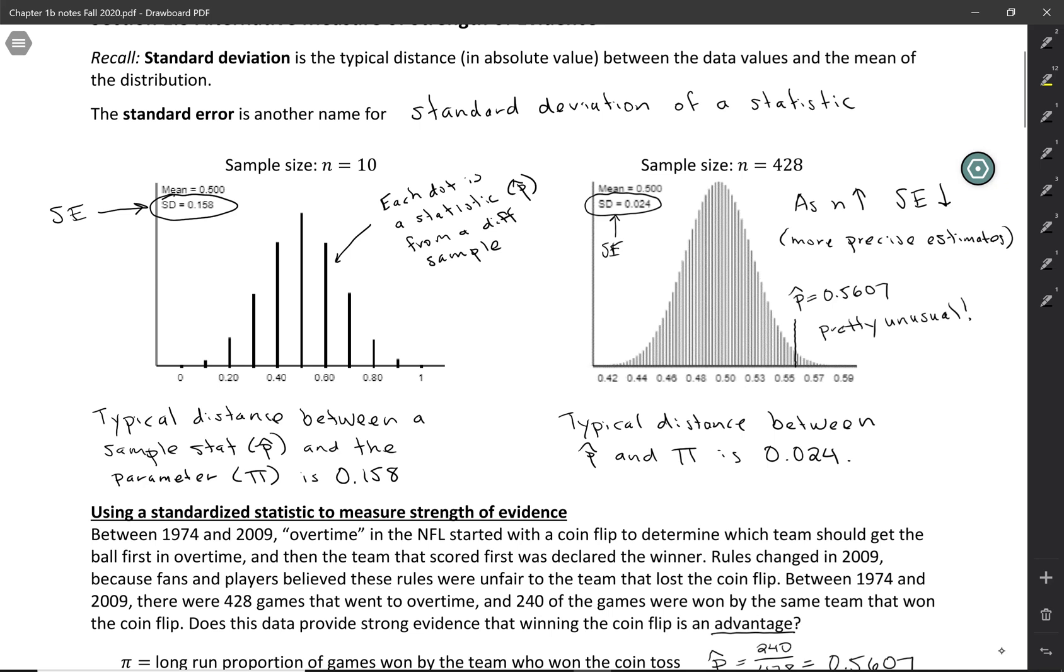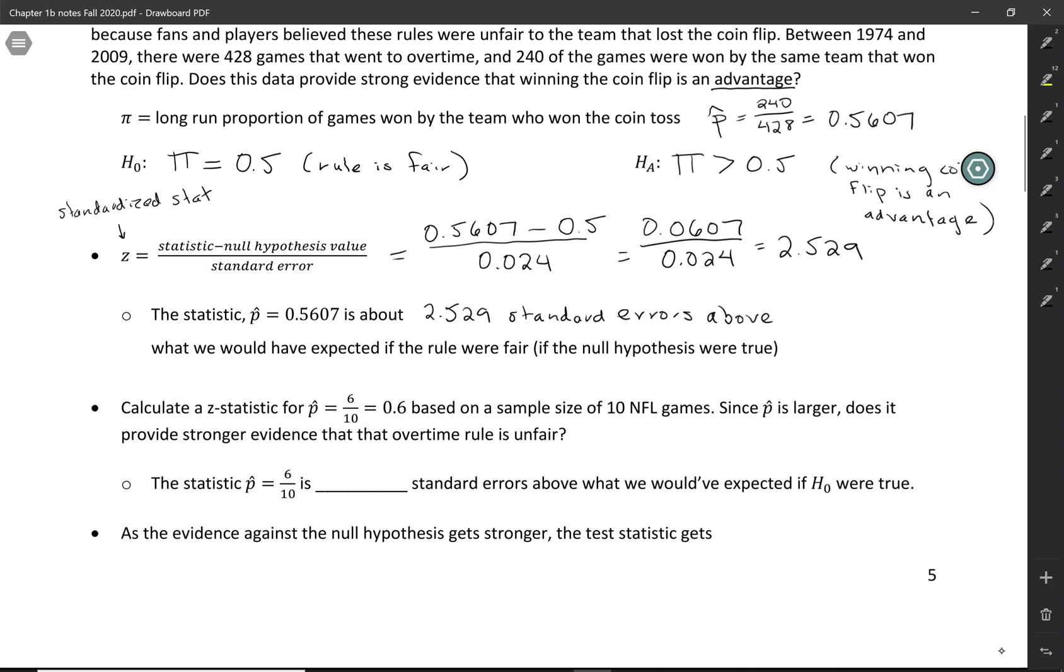What if we tried to do this based on only 10 games? Let's say we looked at a set of 10 games and 6 out of 10 times the team that won the coin flip went on to win the game, so p-hat equals 0.6. In this case, p-hat is larger, so does that provide stronger evidence that the overtime rule is unfair? Intuitively, no—it's going to be very difficult to say anything based on only 10 games. But we can confirm this looking at the z-statistic.